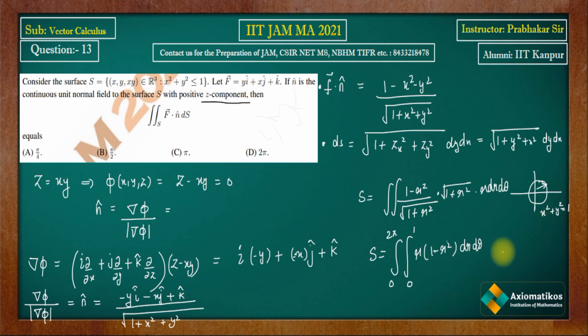You just have to integrate this. When you integrate this, you will get the answer. From here, the answer will come as 1/4, and then when you integrate 2π, you'll get π/2.